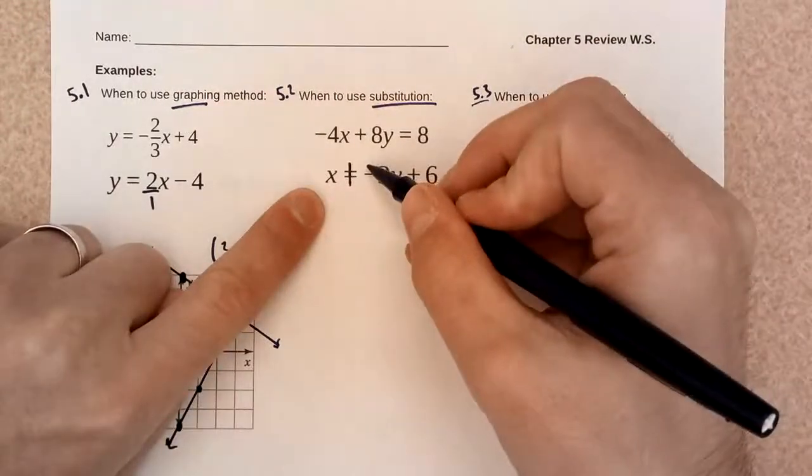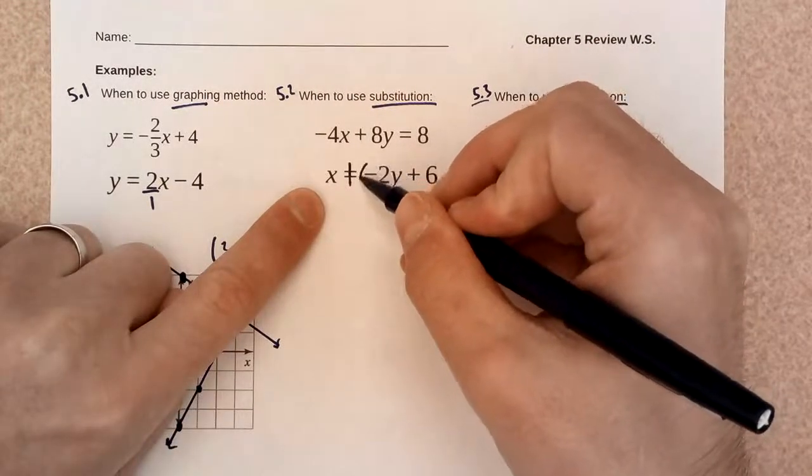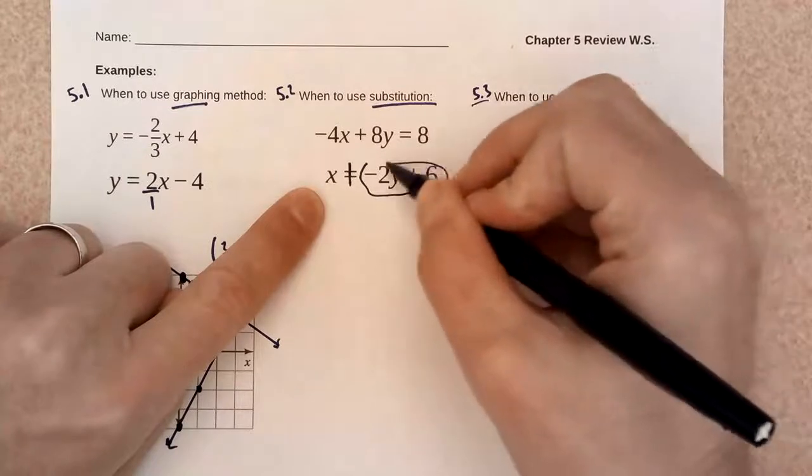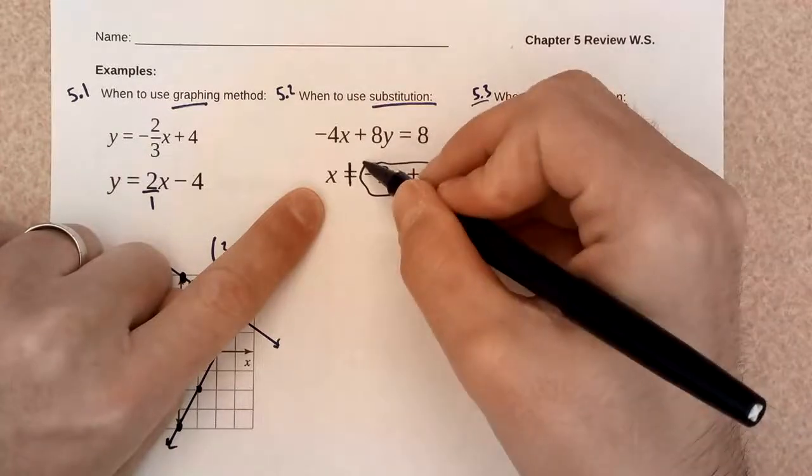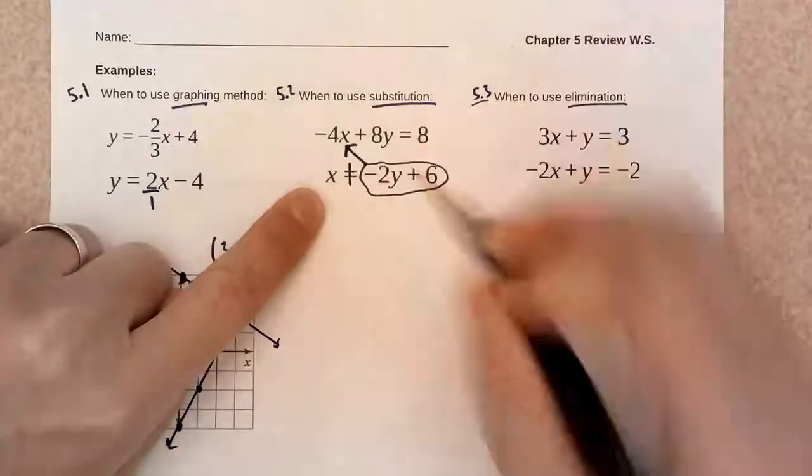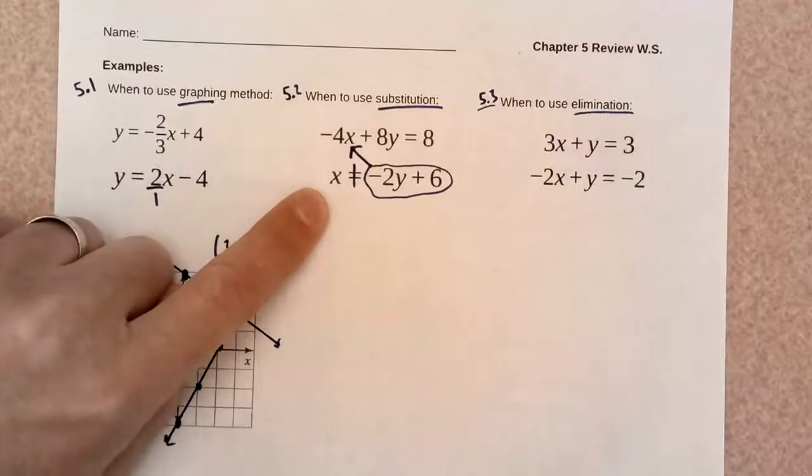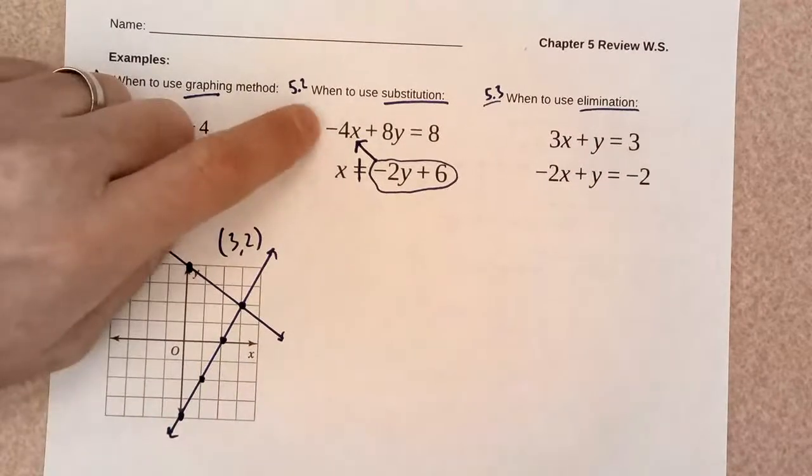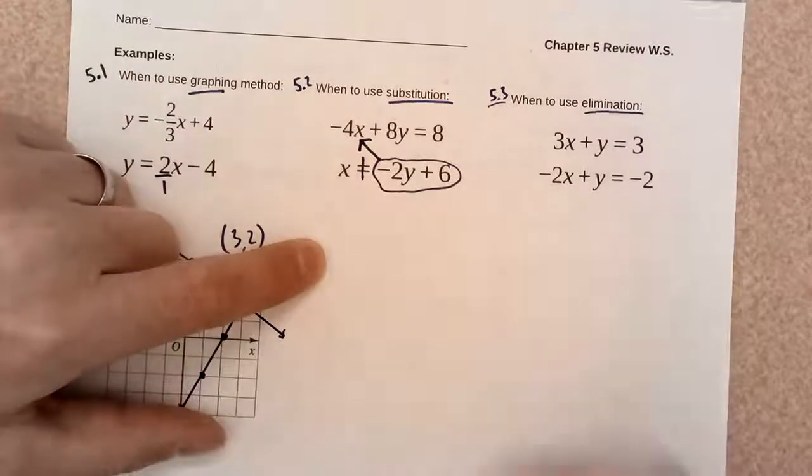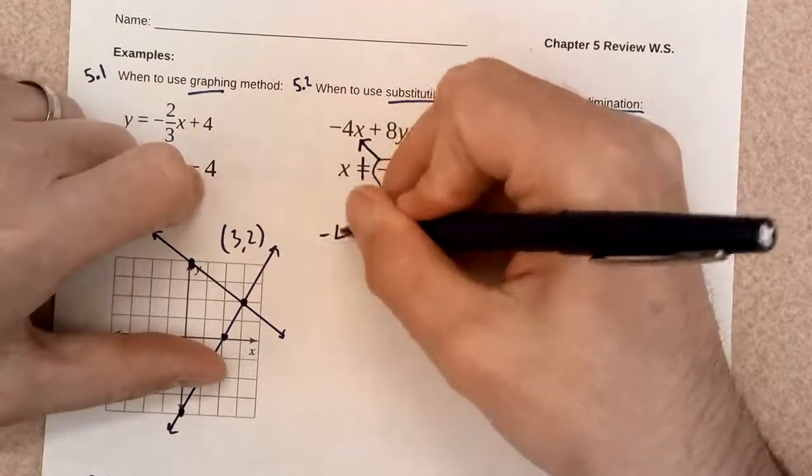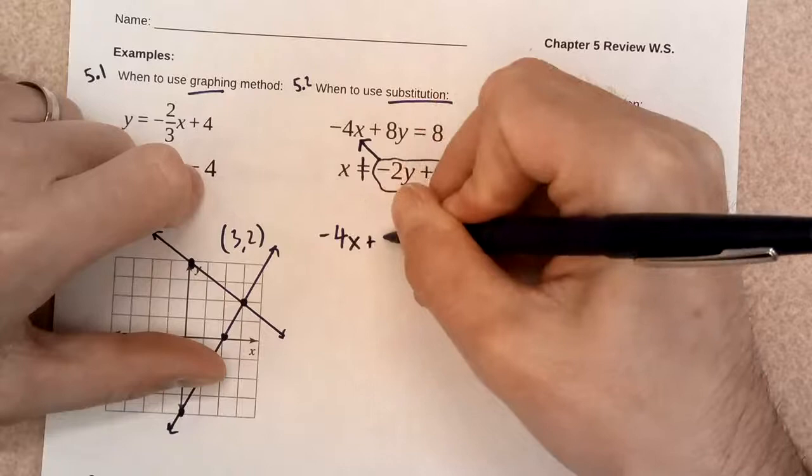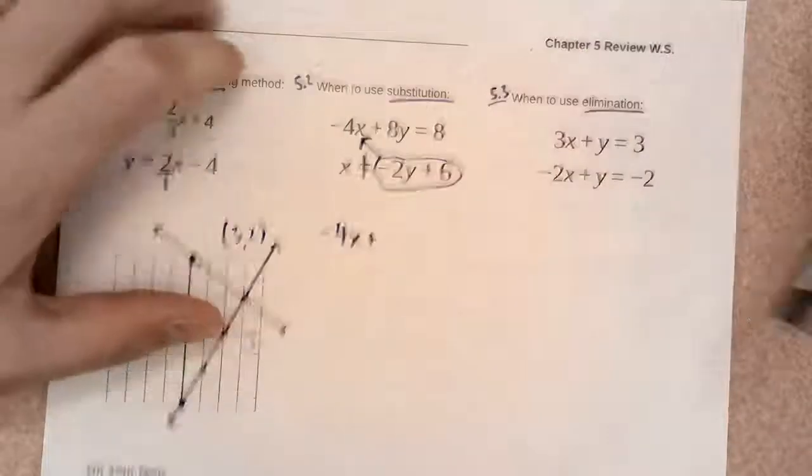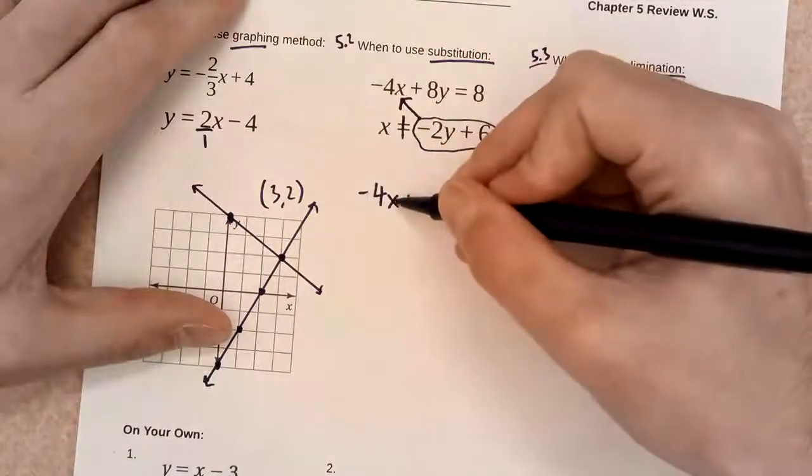And so, for that reason, I'm going to take this whole expression for x right here, and I'm going to put it into my other equation where the x is. So, let's go ahead and copy this equation down here. Negative 4x plus... Oh, dang it. I messed up. Because the x shouldn't be there.